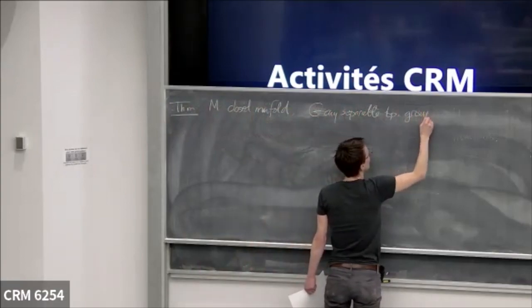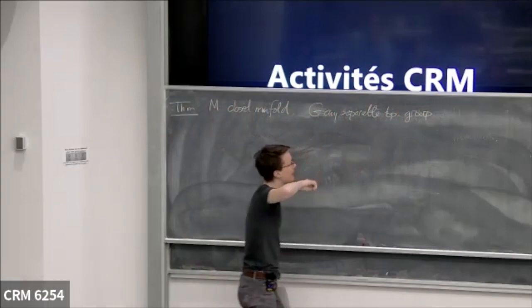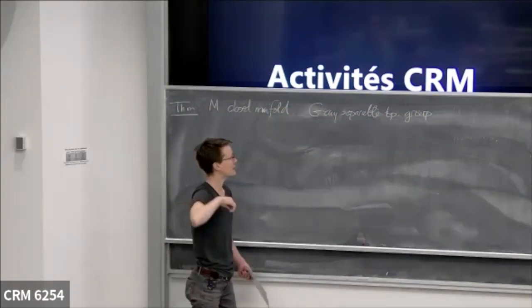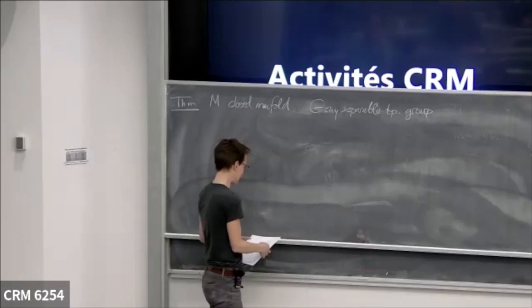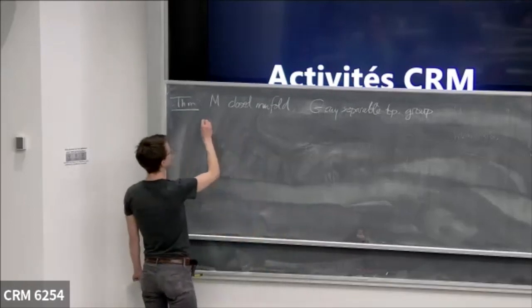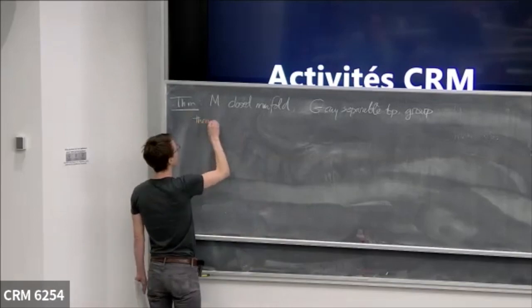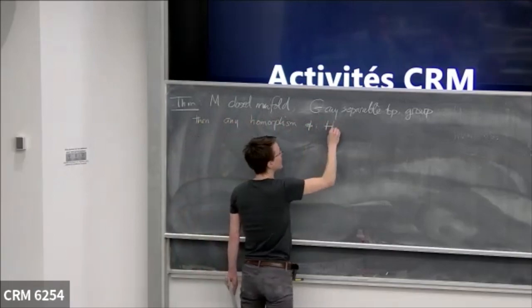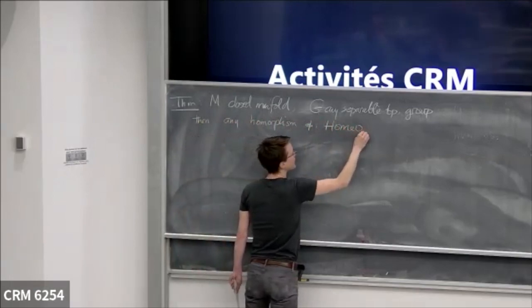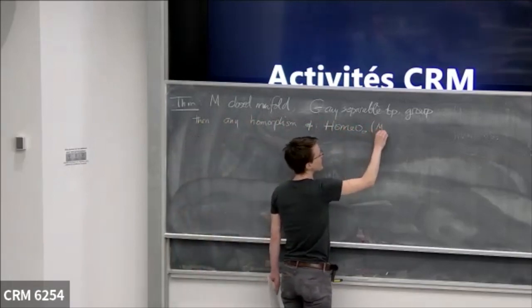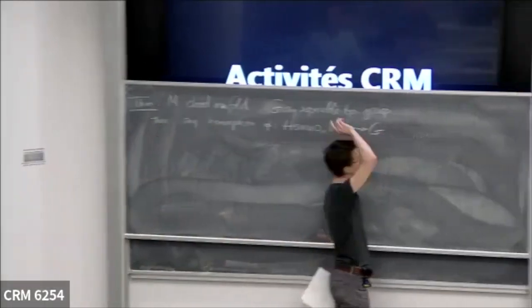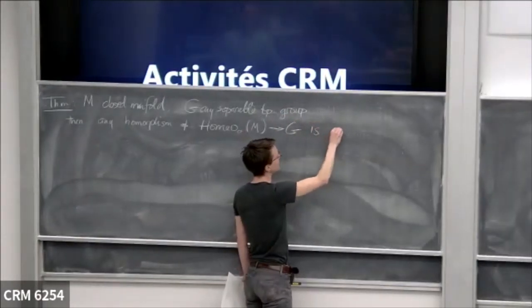Separable means that there exists a countable dense set in G as a topological space. Then any abstract homomorphism from the identity component of a group of homeomorphisms of M to G — we didn't assume it was continuous — but the conclusion is that it is continuous.